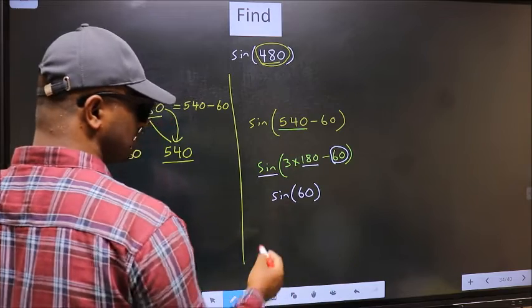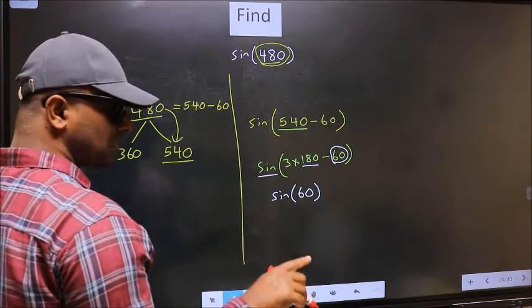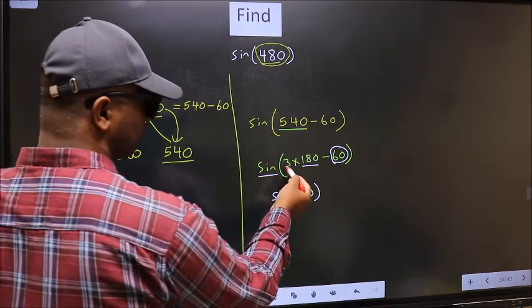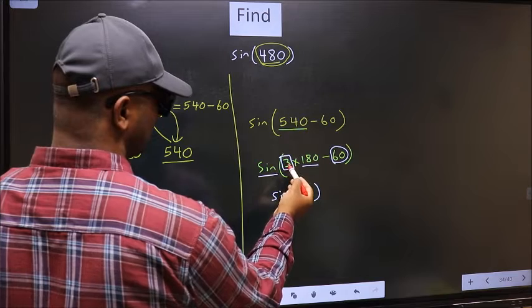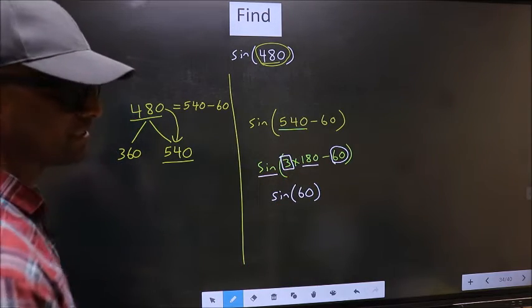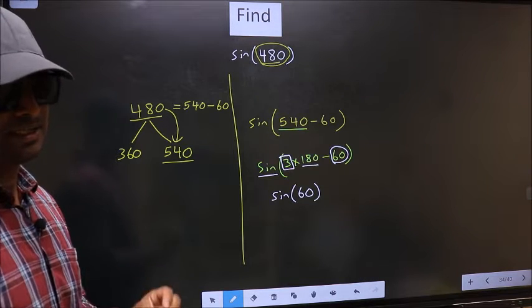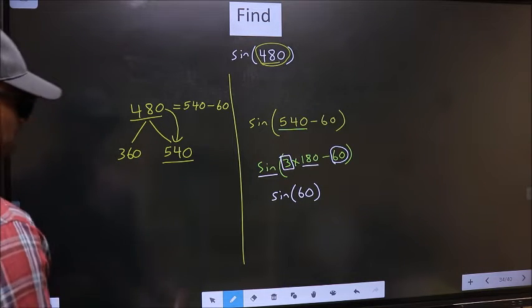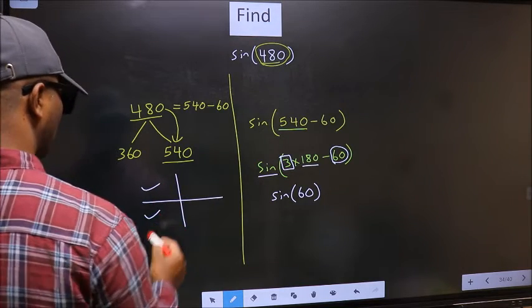Now the question is, will we get here plus or minus? To answer that, we should look at the number before 180. That is 3. And 3 is odd. And all the odd multiples of 180, they lie either in the second or in the third quadrant.